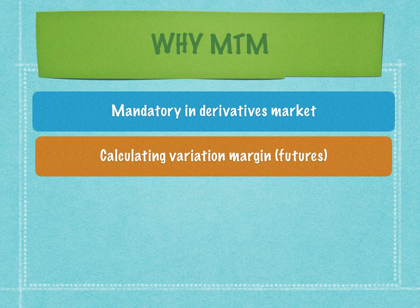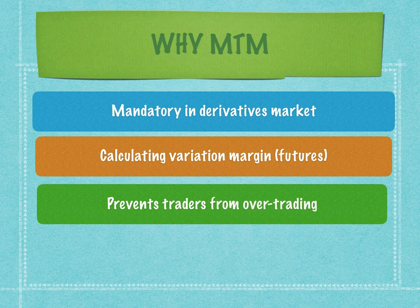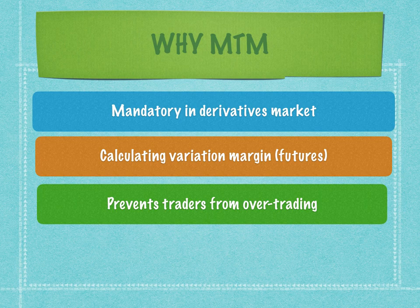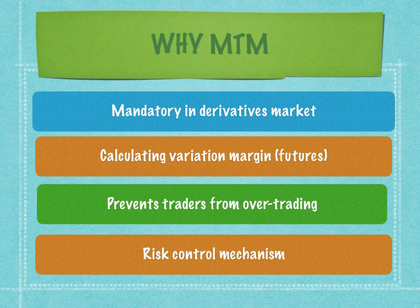Therefore, banks across the world are mandated to pay margin in the futures market. By paying margin in the futures and options market, it prevents traders from over-trading. When a trader has a loss-making position, they may be tempted to take an additional position in the same security to average it out. But mark to market controls the trader and prevents the bank from being overexposed to volatility in the securities markets. This is a very strong and comprehensive risk control mechanism.